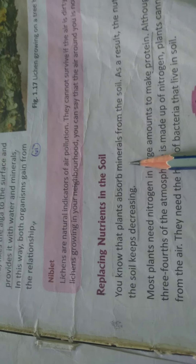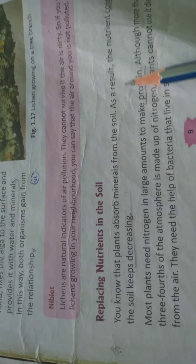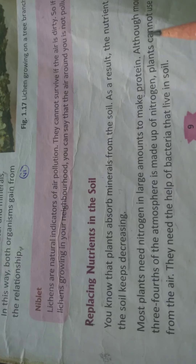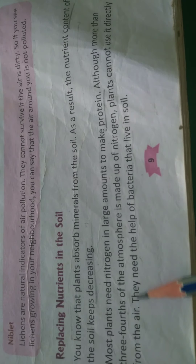The next topic is replacing nutrients in the soil. You know that plants absorb minerals from the soil, and as a result the nutrient content of the soil keeps decreasing. Most plants need nitrogen in large amounts to make protein, but more than three-fourths of the atmosphere is made up of nitrogen that plants cannot use directly.